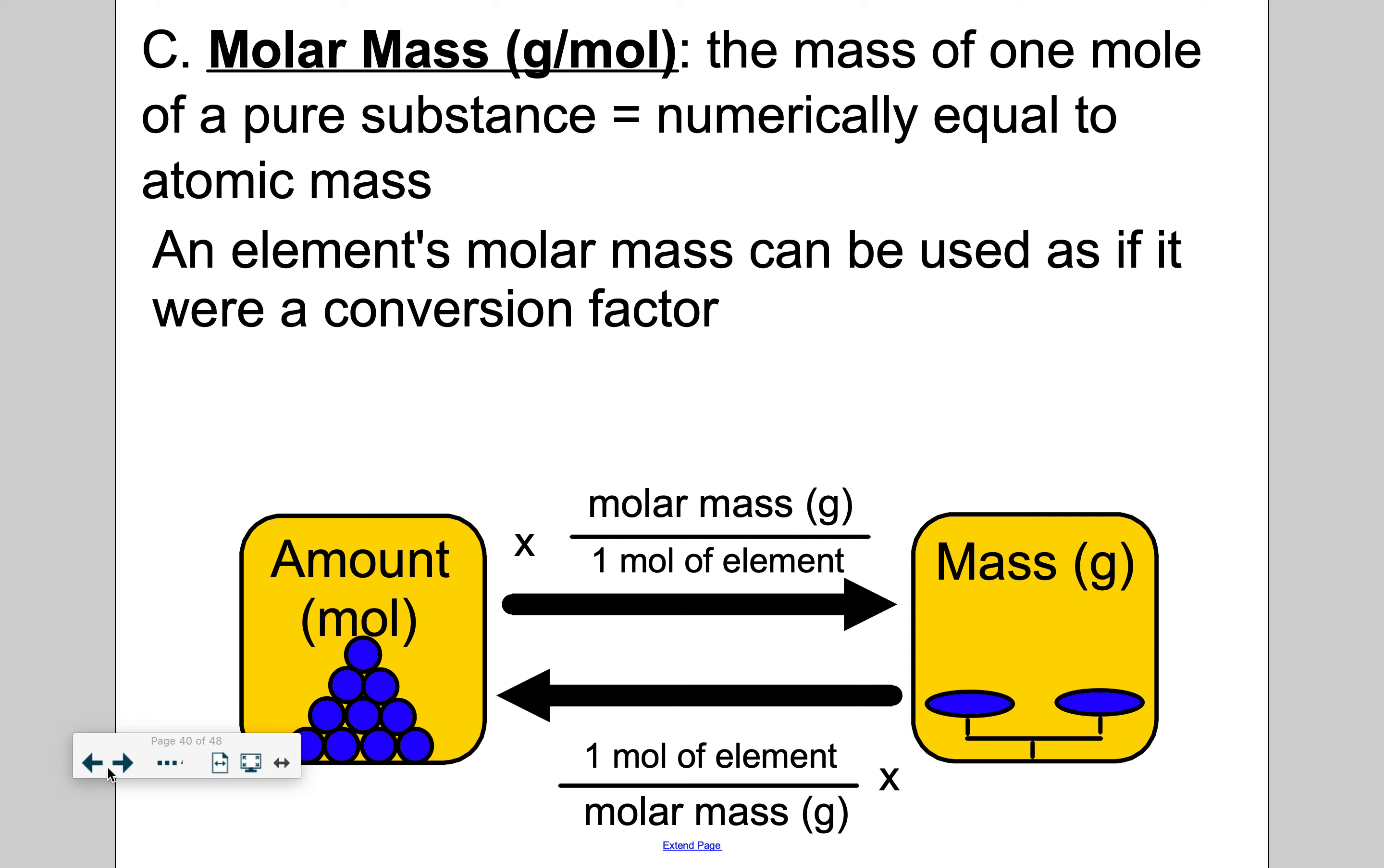So that 12.01 grams of carbon, that 63.55 grams of copper, those numbers are called the molar mass of those elements. So the molar mass has a unit grams per mole. The mass of one mole of a pure substance equals or is numerically equal to the atomic mass. So an element's molar mass can be used if it were a conversion factor.